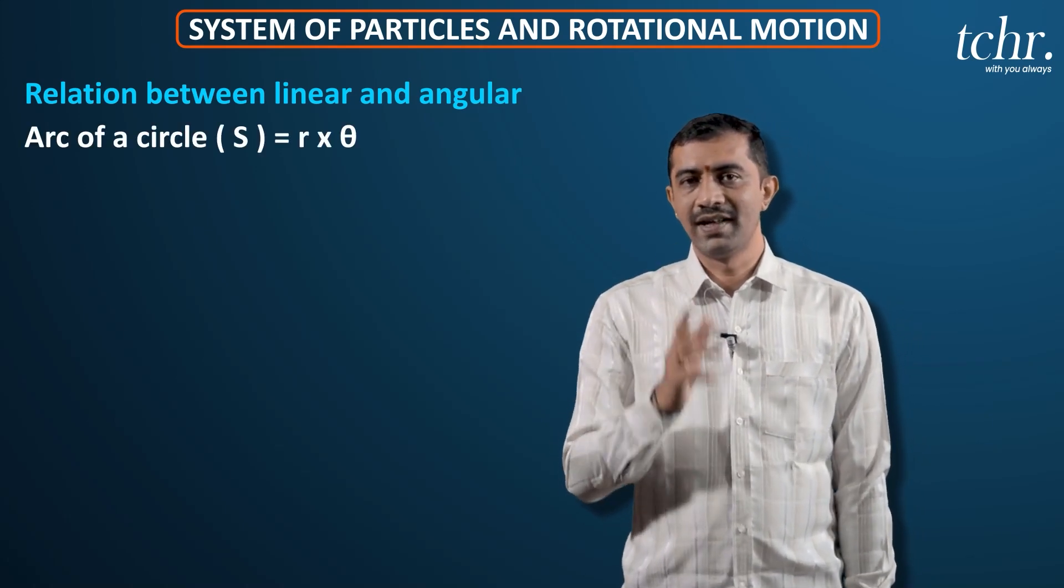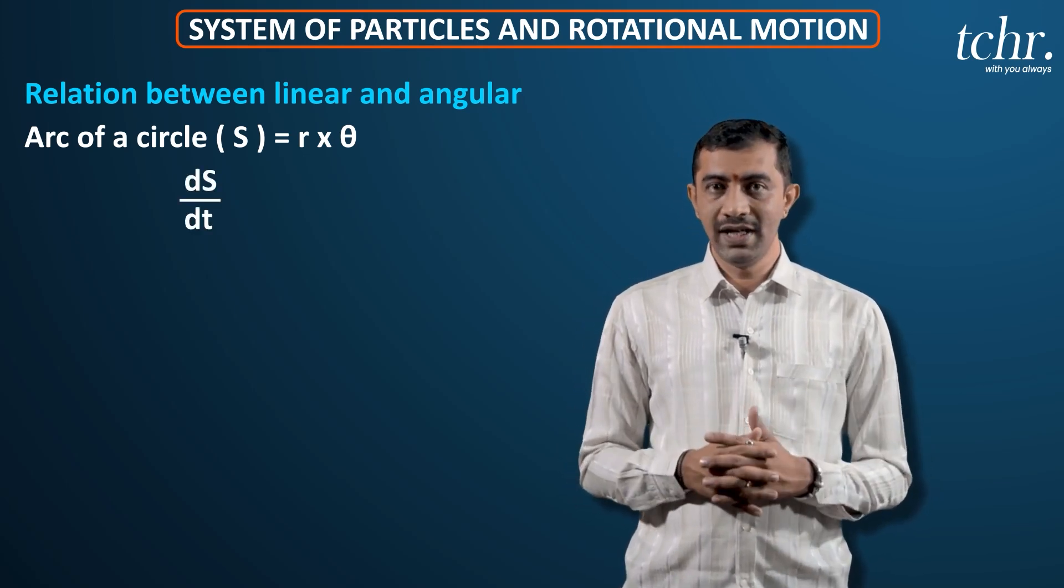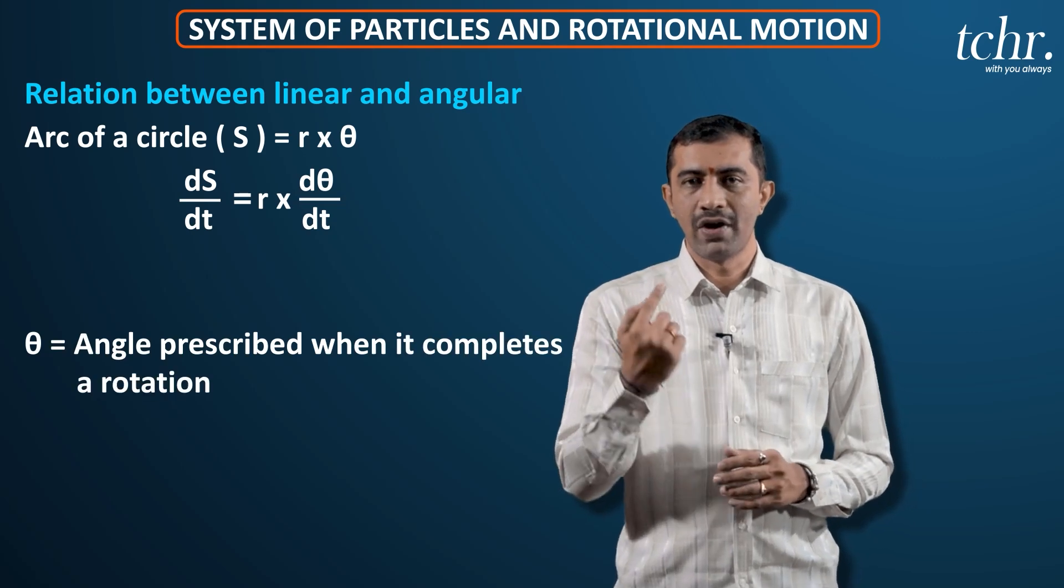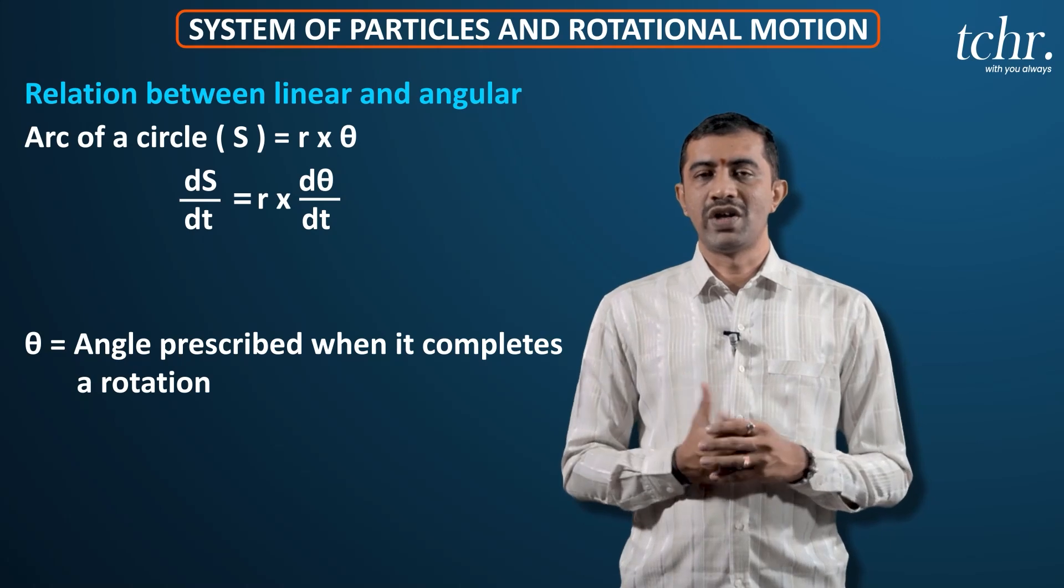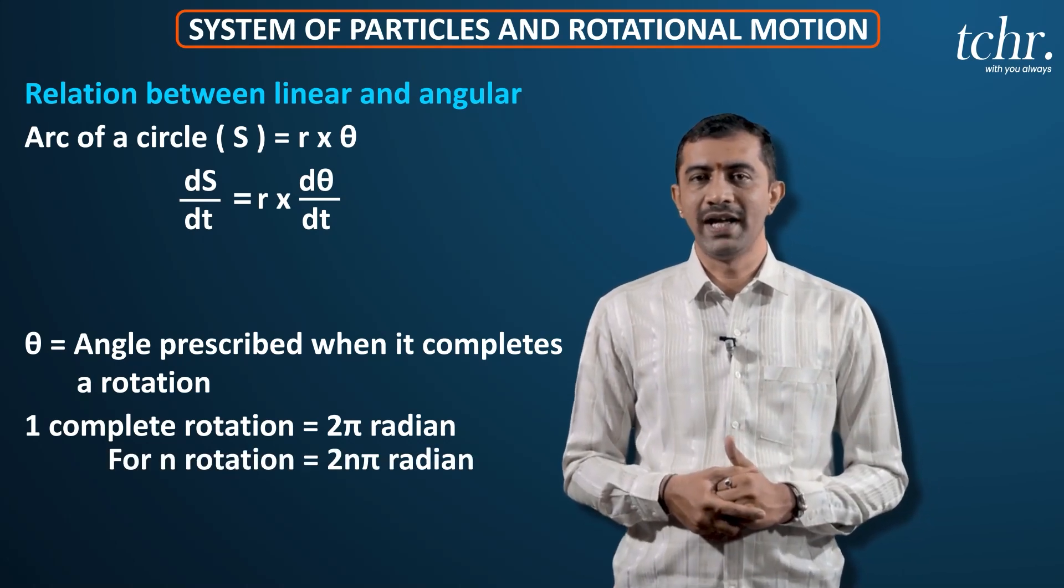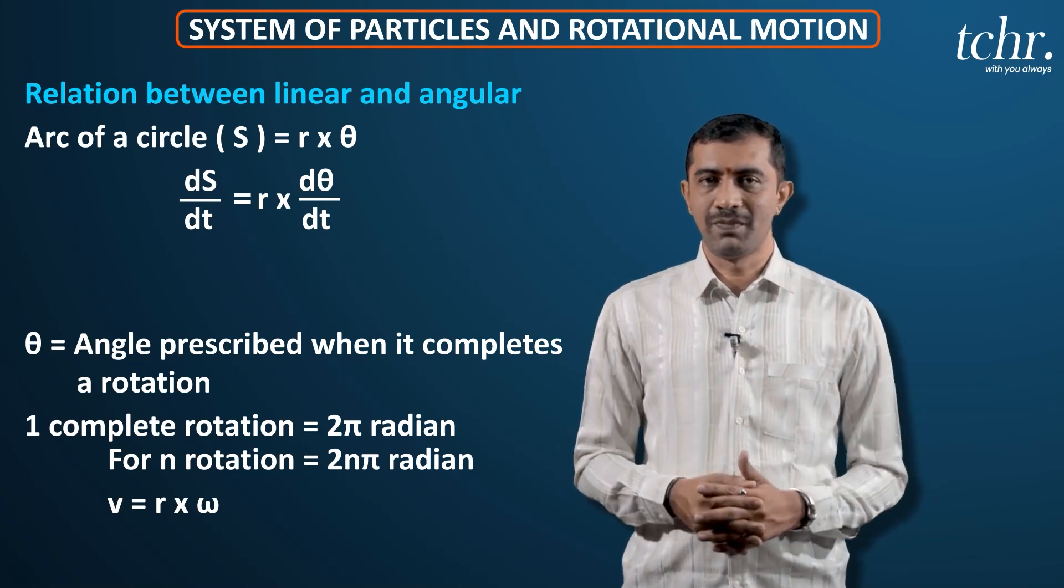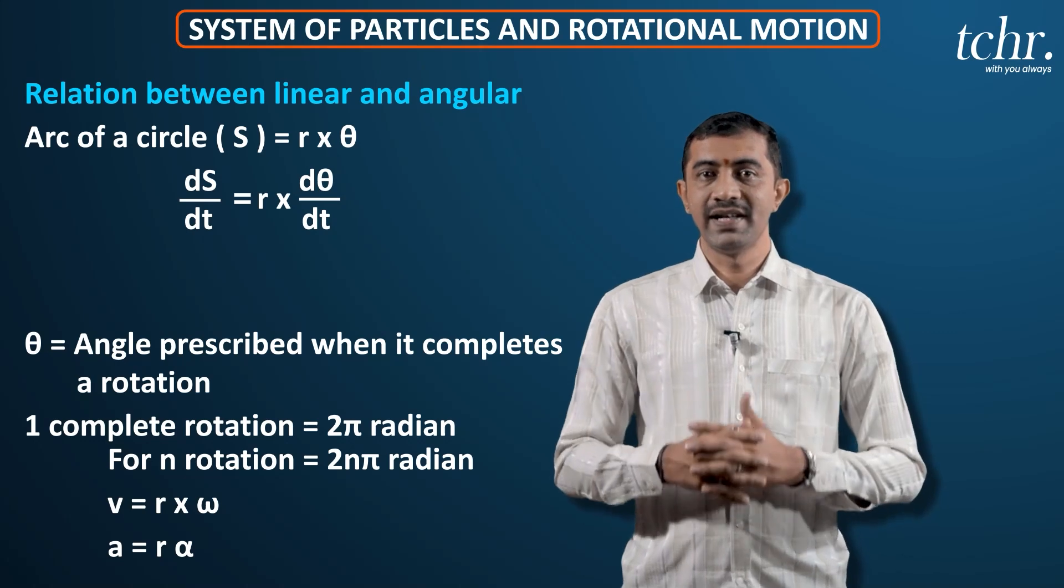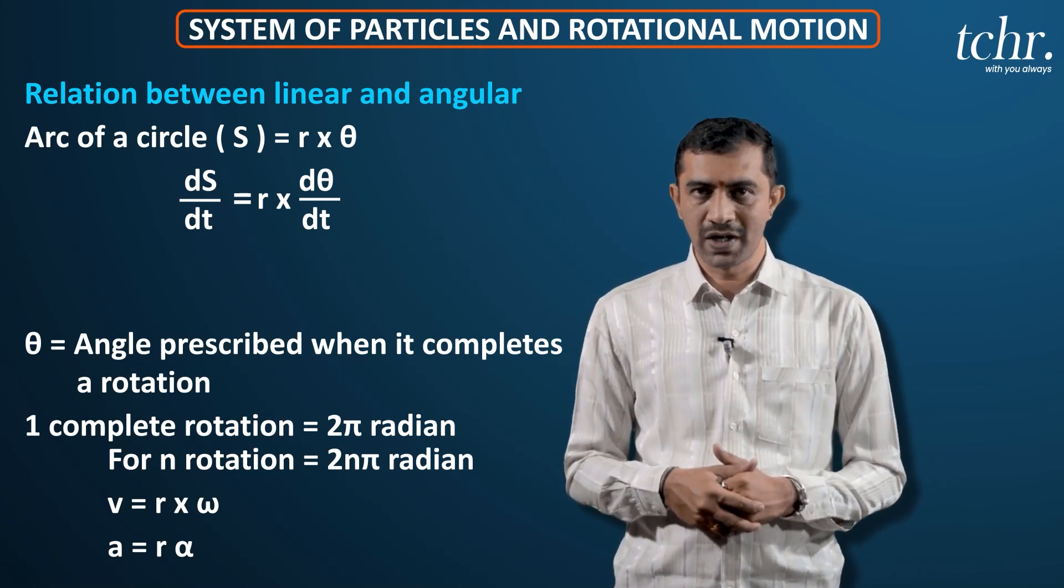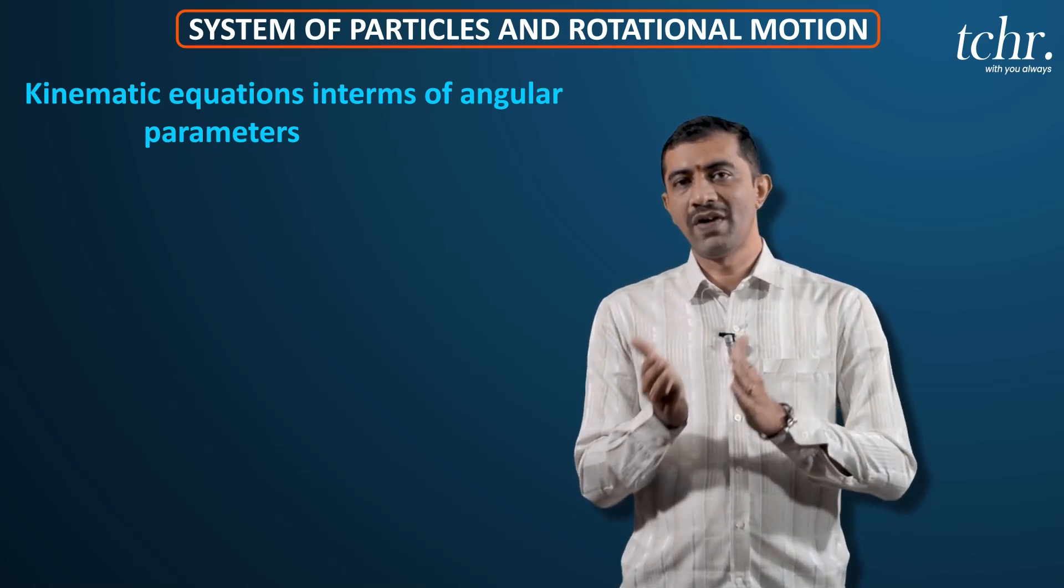Then what is the relation connecting between linear and angular? Yes, arc of a circle equal to R into theta. Differentiate and ds by dt will give me velocity, linear velocity, R into d theta by dt will give me angular velocity. Theta is the number of rotations, angle prescribed when it completes a particular rotation. One complete rotation is 2 pi radian. If it is undergoing n rotations, 2n pi radian. That is the value of theta. So V equal to R omega. Then differentiate, A equal to R alpha where alpha is the angular acceleration of the body. Equations of motion can be used.